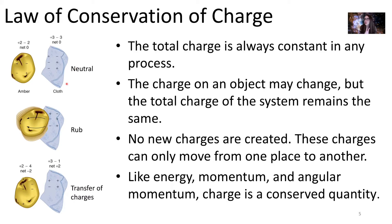Here we have two originally neutral objects, which means they both have the same number of positive and negative charges. The cloth has three negative charges and three positive charges — a net neutral zero excess. The amber is also a neutral object with two positive charges and two negative charges. Now we're going to rub them together, and in the end we exchange electrons. When objects transfer charge, you can think of it as electrons flowing or moving between the objects. We've transferred two electrons from the originally neutral cloth over to the amber.